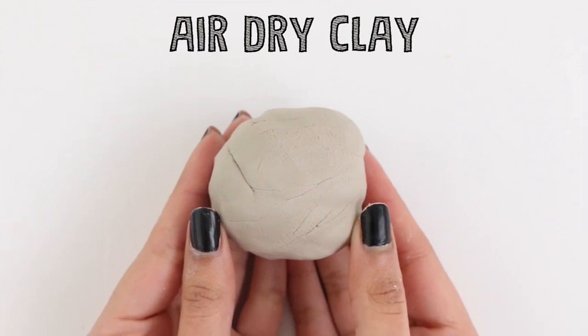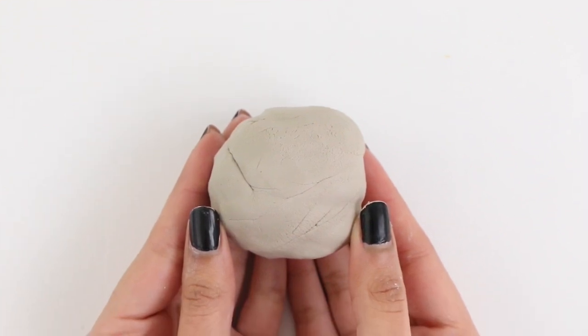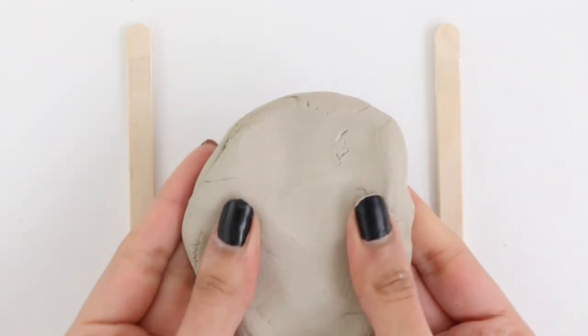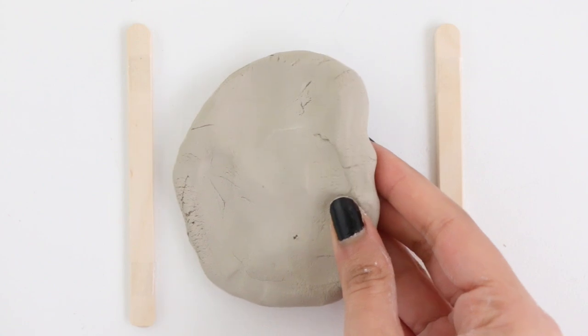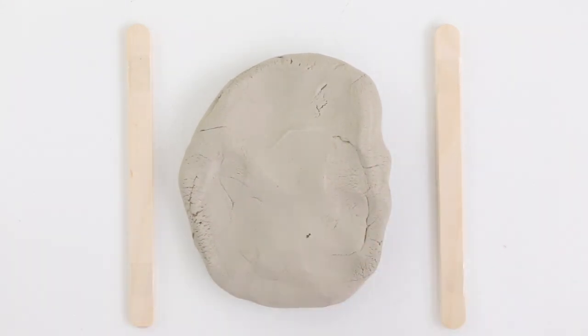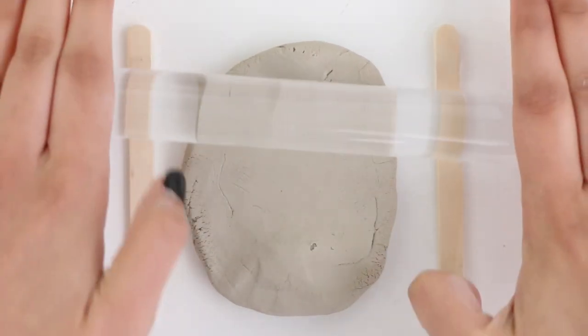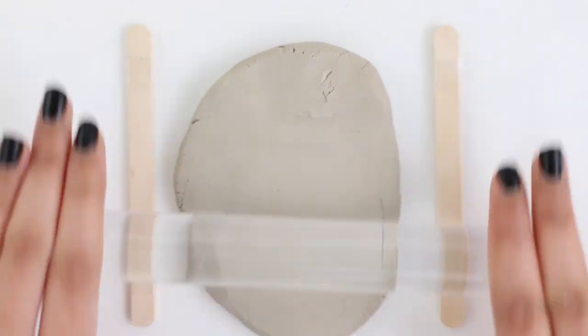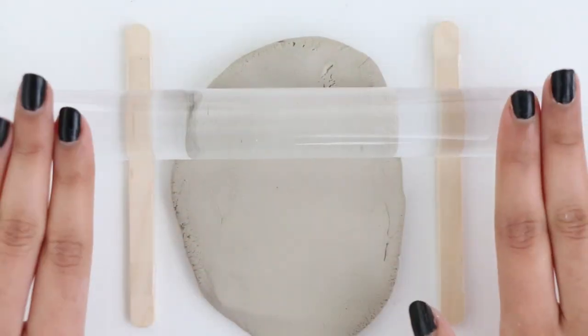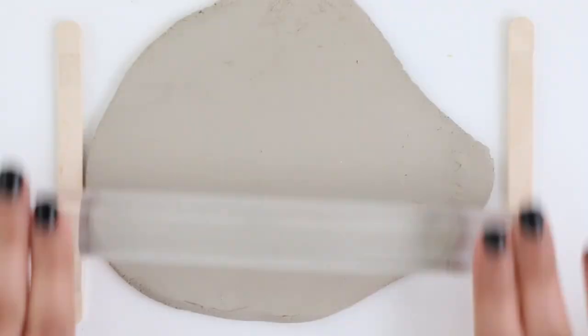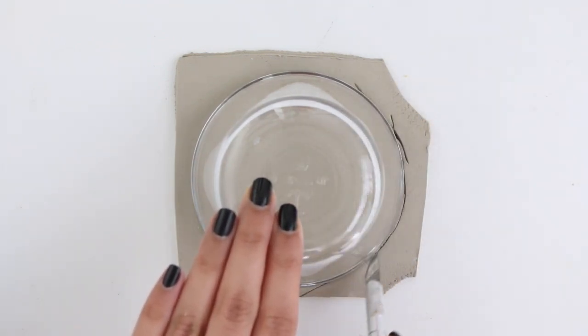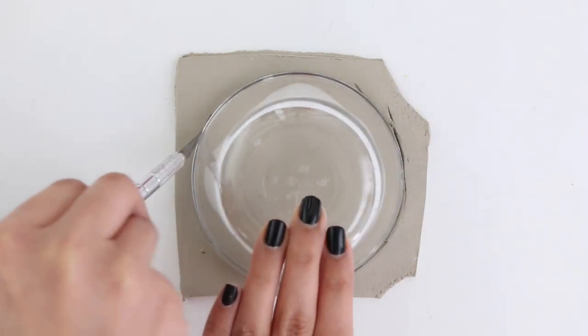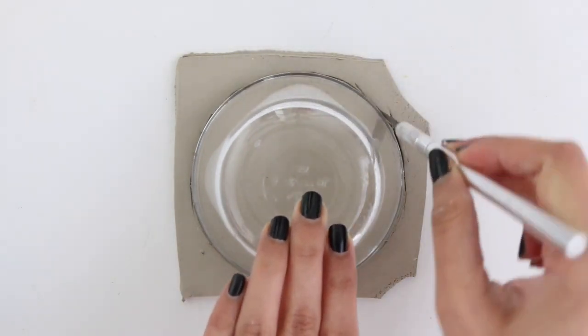For the next DIY, I'm making a donut clay bowl. For this one you're going to need air dry clay. So I'm going to go ahead and roll that out. I place two popsicle sticks on the side to make sure that I get an even thickness. Next, using a bowl, I'm going to cut out a pretty big circle. And I also used an exacto knife because that really helps with the cutting.